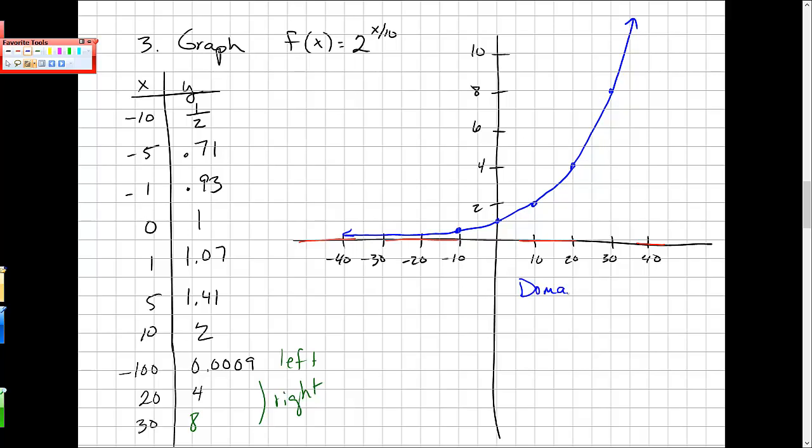So again, still domain minus infinity to infinity. Range 0 to infinity. There's a horizontal asymptote, it's the line y is equal to 0. There's a y-intercept, it's at 1. There's no x-intercept.